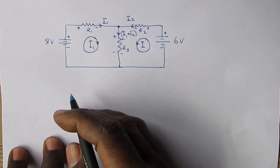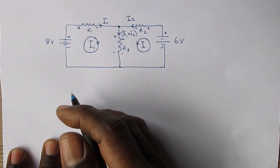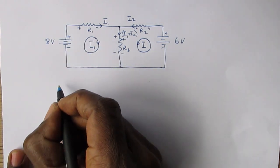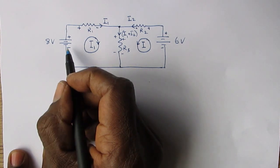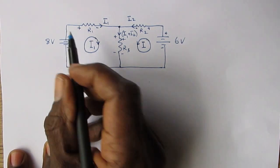Next step, we create an equation using Kirchhoff's voltage law, which states that the algebraic sum of the voltages around a closed loop is zero. We create an equation for the left-hand side. Starting from this point, we ask ourselves: is this a voltage rise or fall? It is a rise from negative to positive, so it will be plus 8 volts.